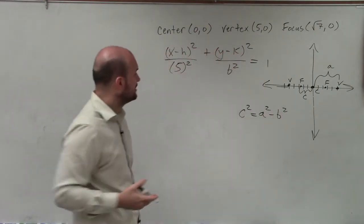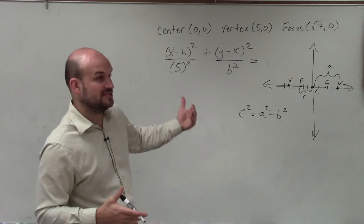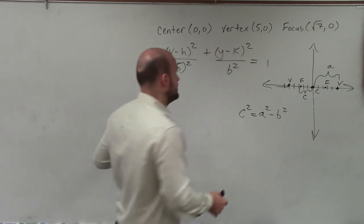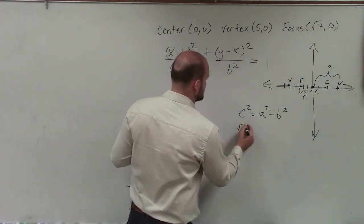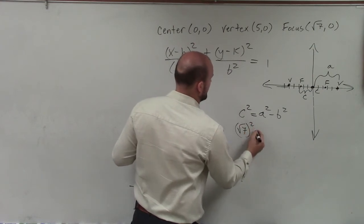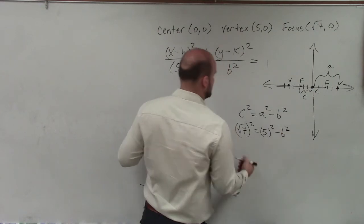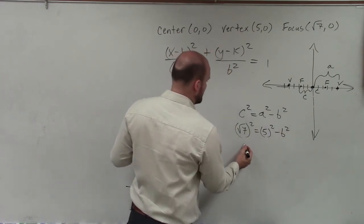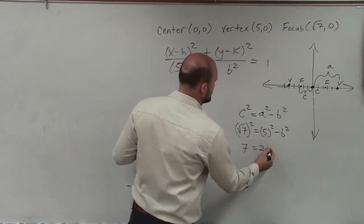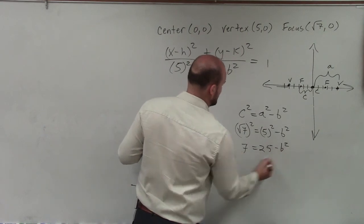So all I'm simply going to do is plug in the information I have for c and a, and then solve for b squared. So c squared is going to be the square root of 7 squared equals a squared, which is 5 squared minus b squared. So therefore, this becomes 7 equals 25 minus b squared.